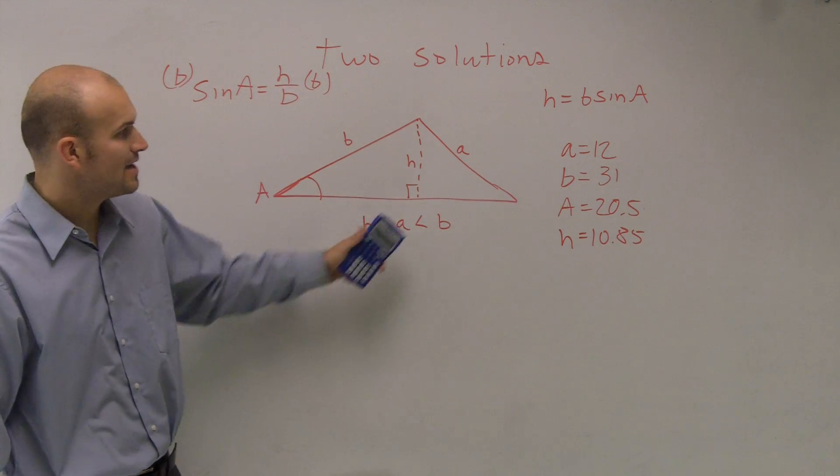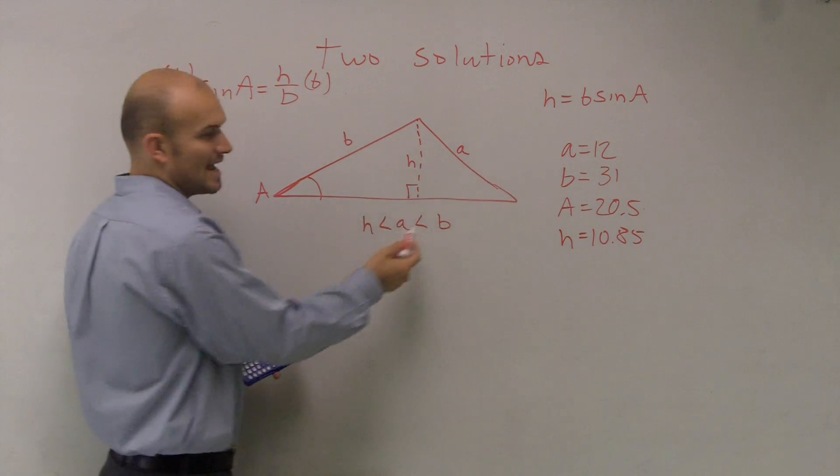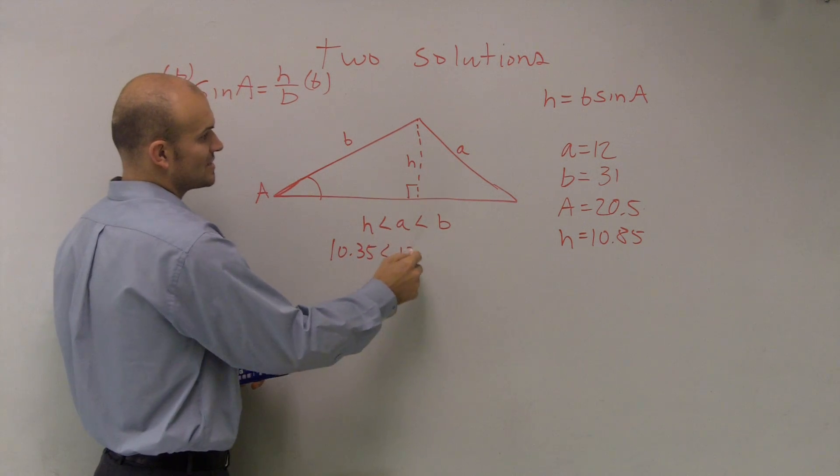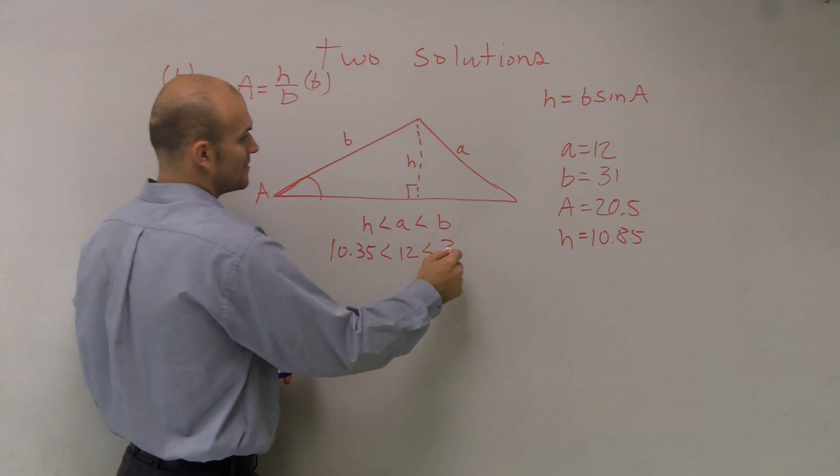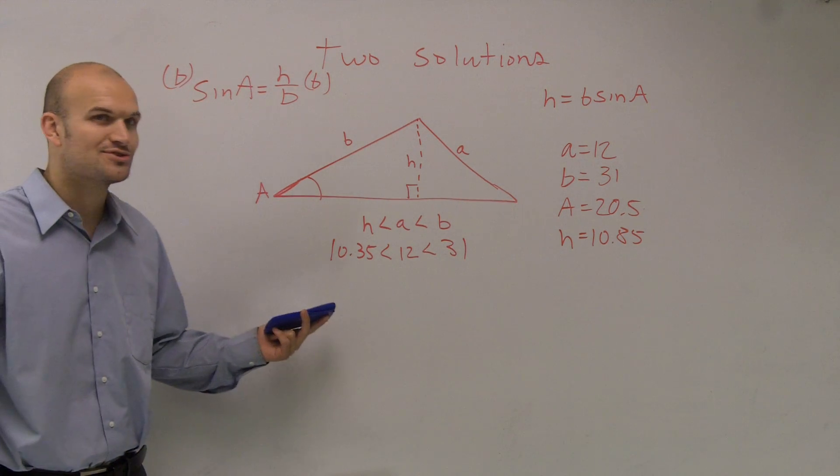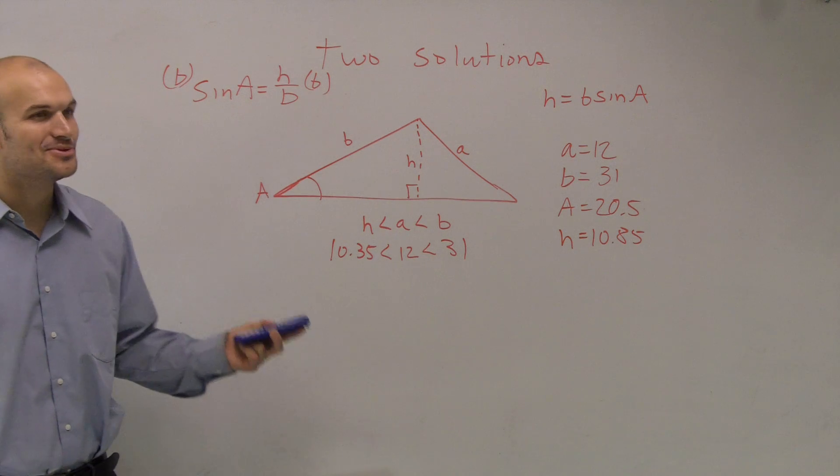So H equals 10.85. And then I look at that. Can I rewrite this with A being in the middle? 10.85 is less than 12, which is less than 31. So therefore, this has two solutions.